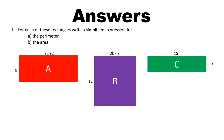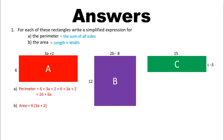I hope the first question went smoothly for you, remembering that the perimeter is the sum of all the outer sides, and for rectangles the area is length times width. For question a, the perimeter would be 6 plus 3a plus 2 plus 6 plus 3a plus 2. Grouping like terms together, that is 6a's altogether and 16, so this is 16 plus 6a. For the area, we'll do the length times the width — using brackets: 6 times (3a plus 2). I need to expand that to simplify: 6 times 3a, and 6 times 2.